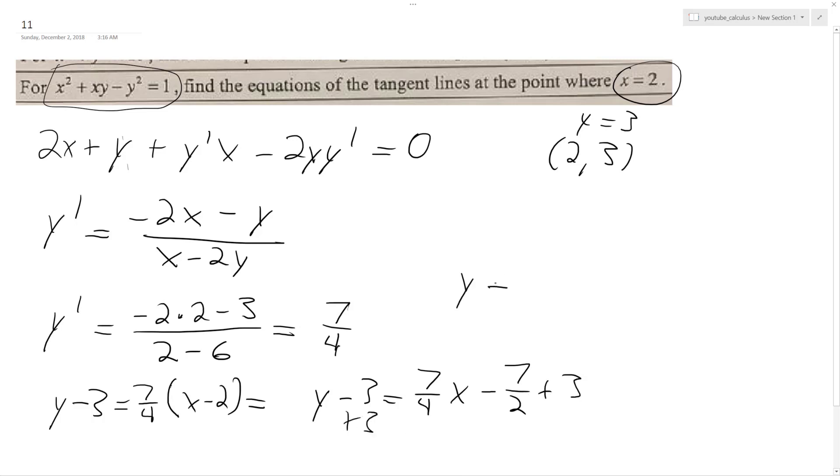So that means our final equation is going to be y equals 7 over 4 x, and then when you add 3, so that's 6, that's plus... no, that's not plus. It's going to be minus 1 over 2, and that's it.